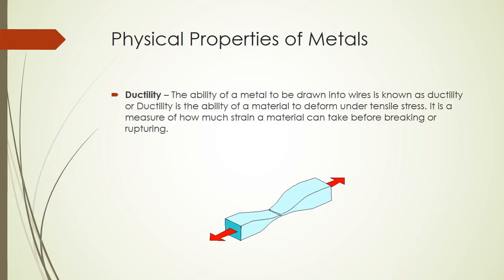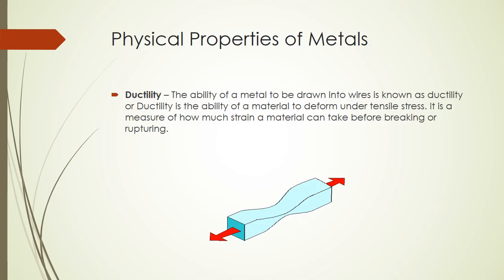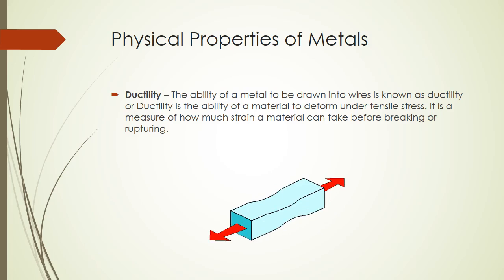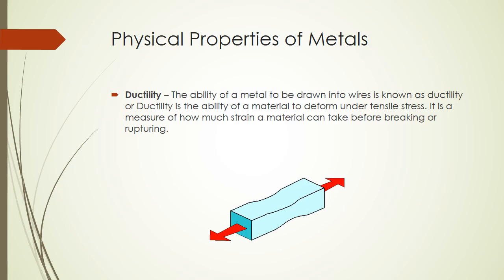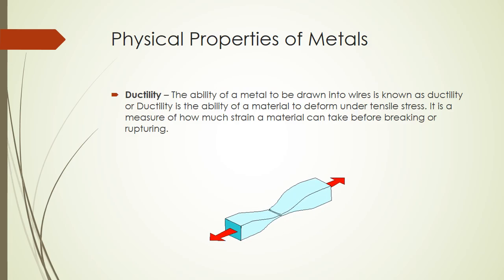Ductility is the ability of a metal to be drawn into wires, or the ability of a material to deform under tensile strength. It is a measure of how much strain a metal can take before breaking.